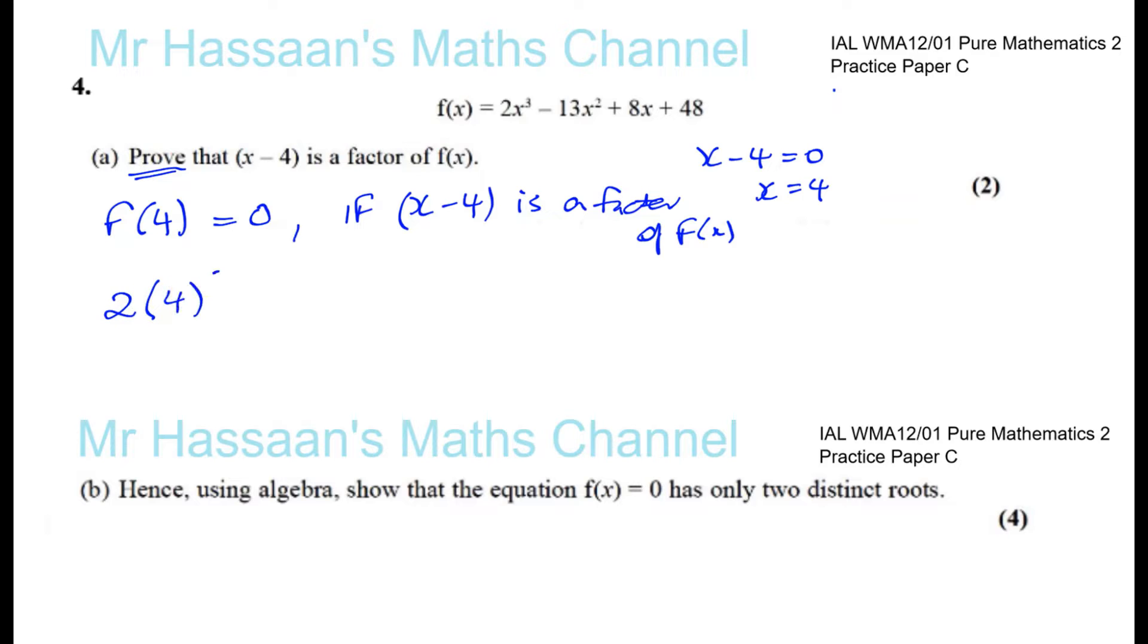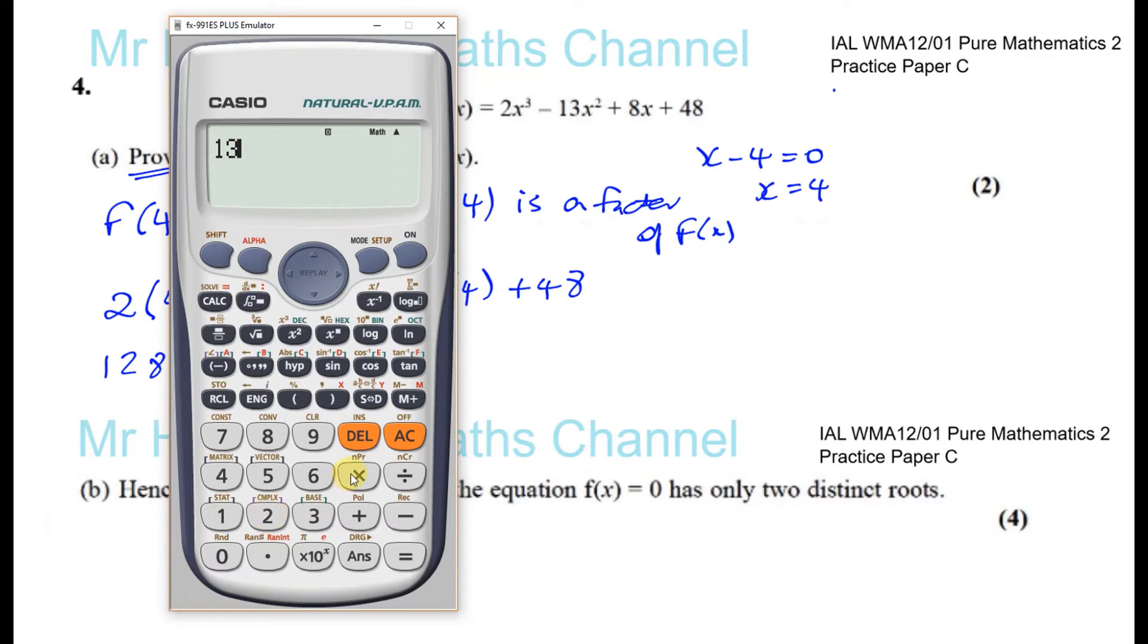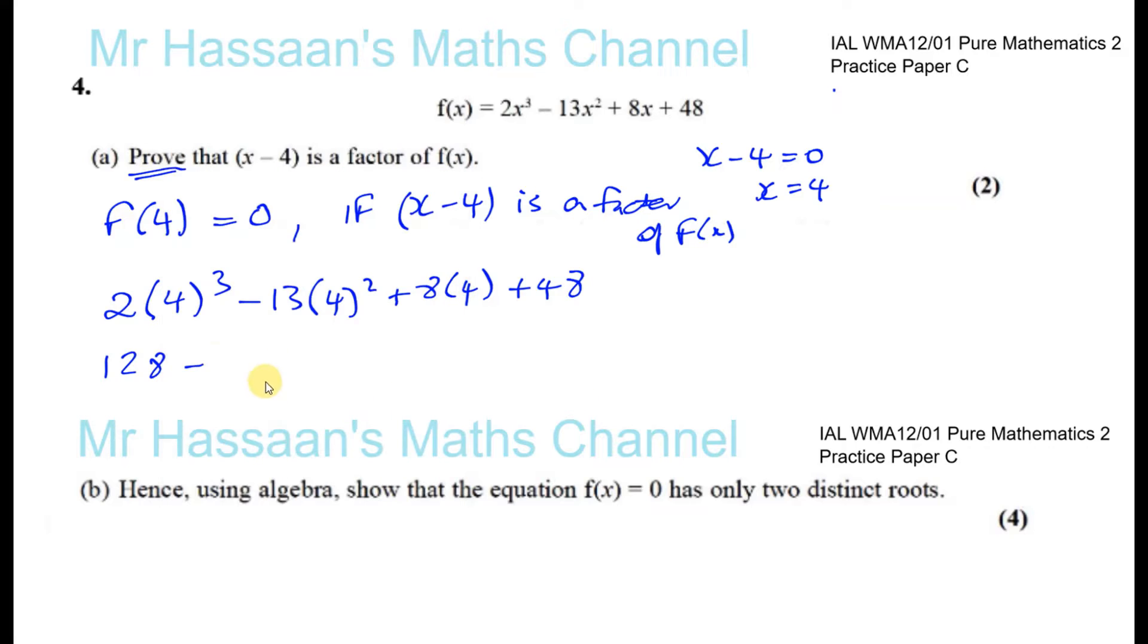So now we're going to put 4 into this function and see what happens. We have 2 times 4³ minus 13 times 4² plus 8 times 4 plus 48. So that's 128, so that's 2 times 64 which is 128, minus 13 times 16 which is 208, plus 8 times 4 which is 32, plus 48. So this is going to be 128 plus 80 is 208 minus 208 equals 0.